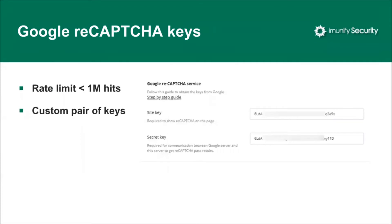Next is Google ReCAPTCHA custom key support. The ReCAPTCHA challenge is currently used in Immunify 360 to block attackers with graylisted IPs — humans can pass it whereas bots cannot. There are at least two issues: ReCAPTCHA could be bypassed by paid anti-bot services, and there is a rate limit of 1 million ReCAPTCHA shows in the free version. If you exceed the limit, you'll have to switch to the paid enterprise version. Long-term, we are looking for a more effective solution such as a custom splash screen.